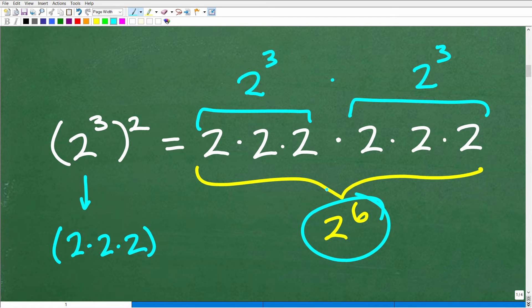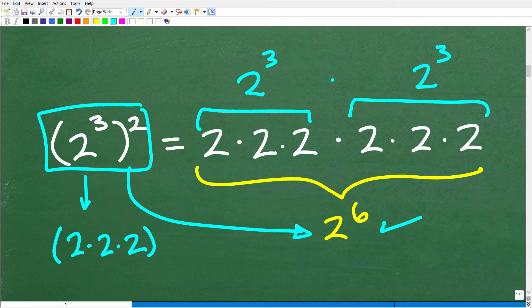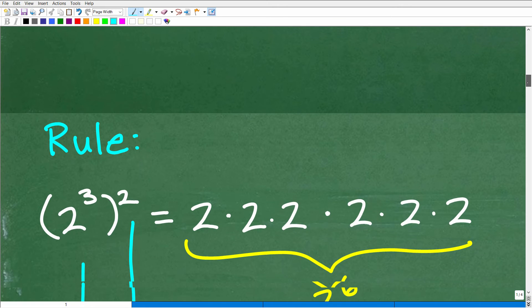So it looks like two to the third power squared, we know that the answer is two to the sixth. So how can we go from here to here? It appears that we've multiplied that outside exponent by the inside exponent. In other words, two times three, that's how we got two to the sixth. And that is exactly what the property or the rule is that we need for this particular problem.